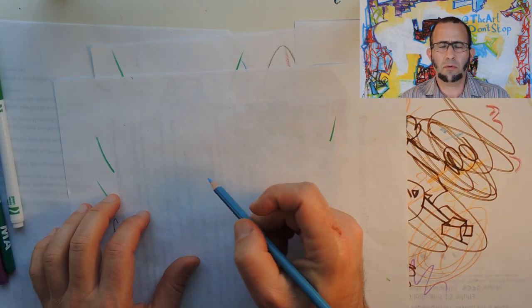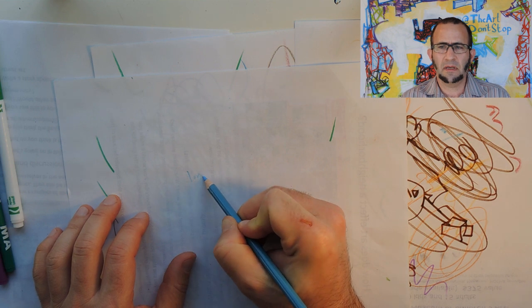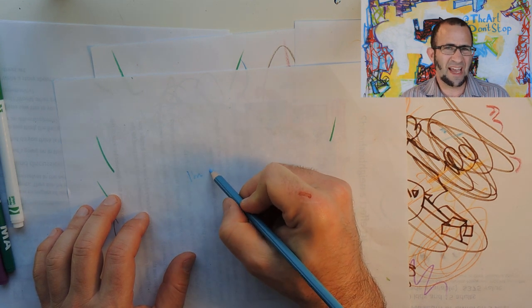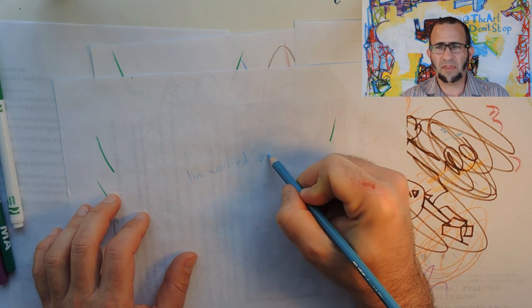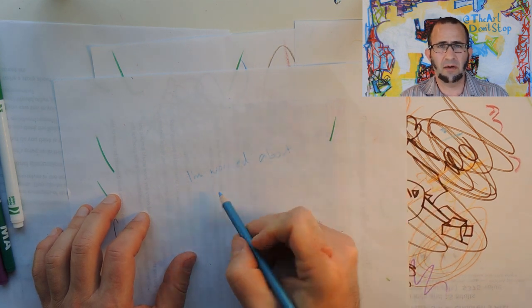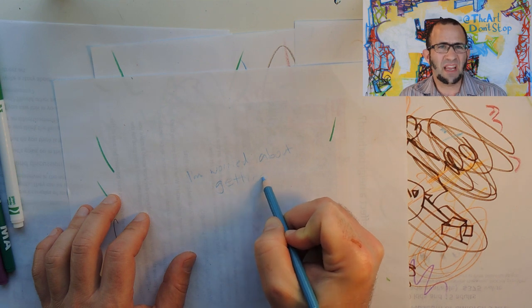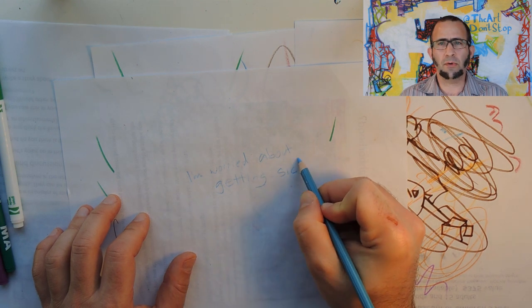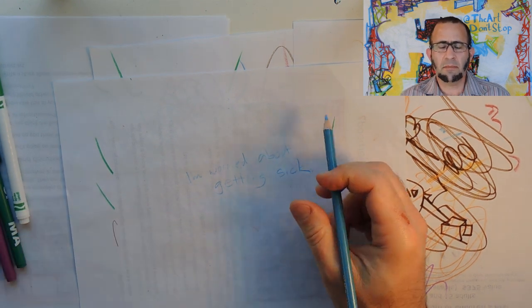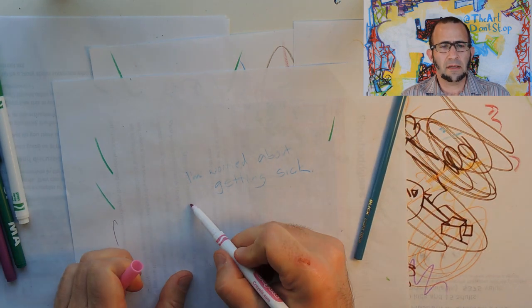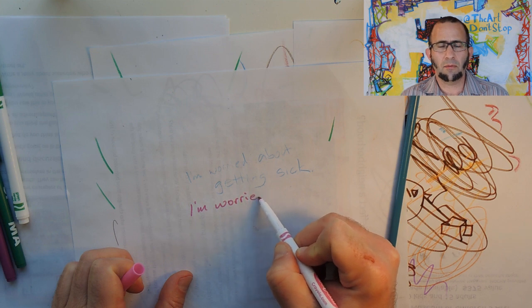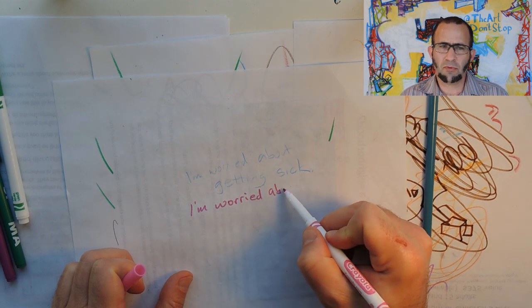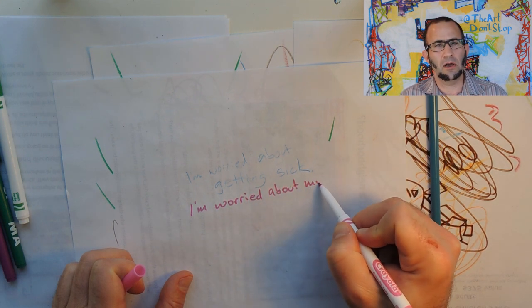So first we're going to think about what we're worried about right now. And I'm just writing down, kind of lightly on the paper, and this is something that can be private, just some things that I'm worried about right now. Some things that are giving me anxiety, and making me more distracted when I try to do other things. So I'm going to write it down, and you don't have to share this, we're going to be covering all this up.